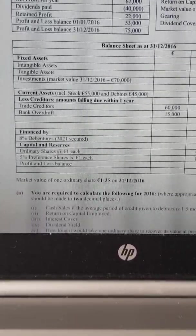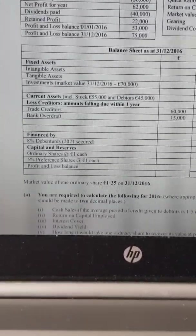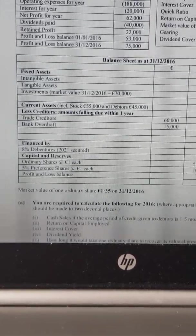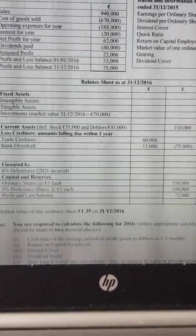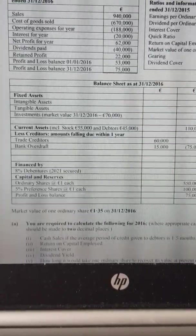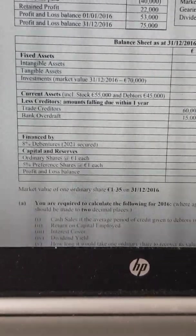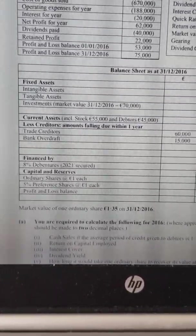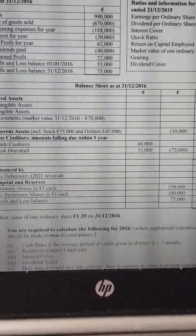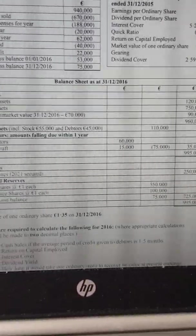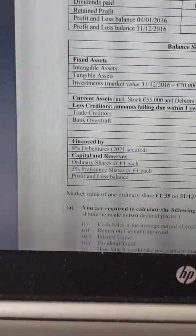Hopefully we know the difference between an ordinary share and a preference share. The main difference is that preference shareholders are entitled to a return. It may not be as great as ordinary shareholders, but it is guaranteed — they have to get a return regardless of the profits made by the company. It does help us when they kindly value the shares at a euro each. So the total amount invested in preference shares was 100,000 euro, meaning 100,000 shares were bought, and the return on these shares is 5%.